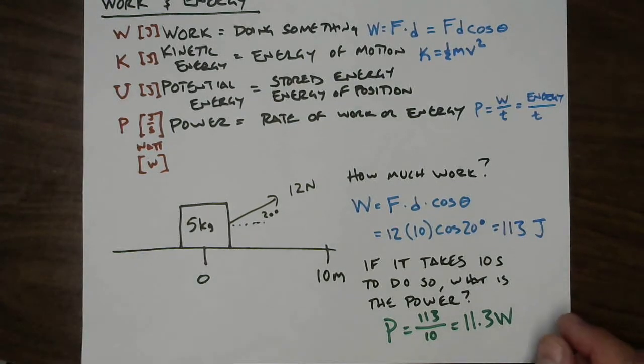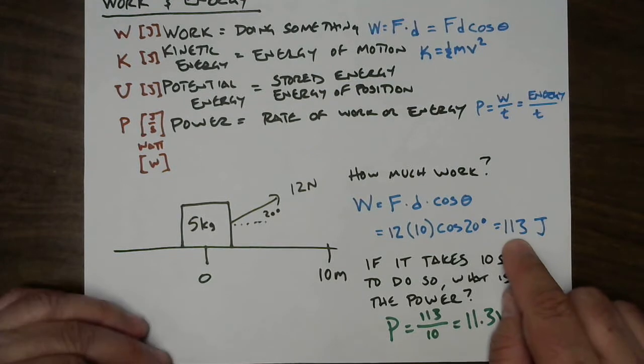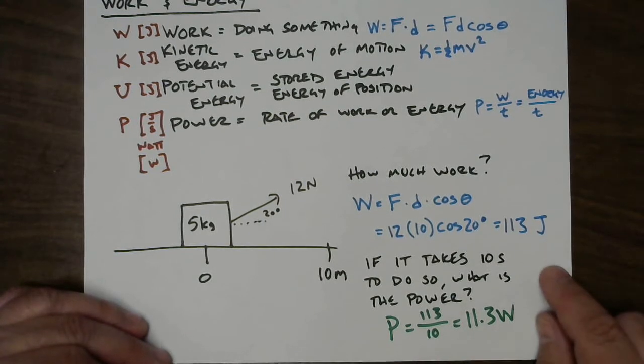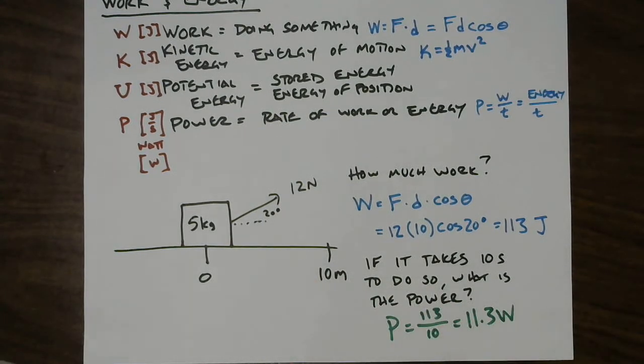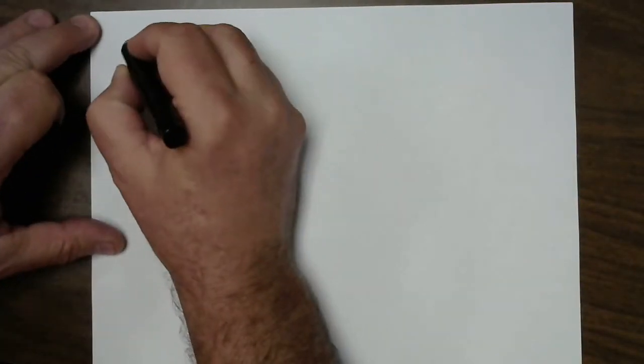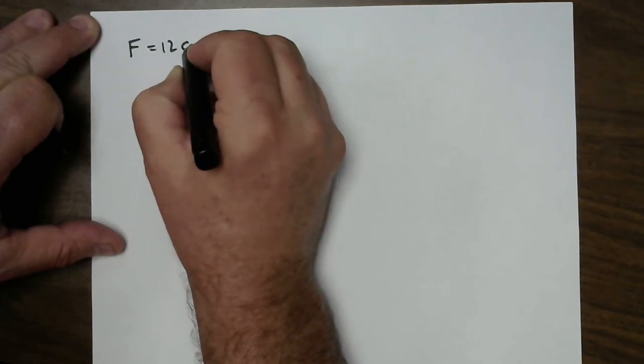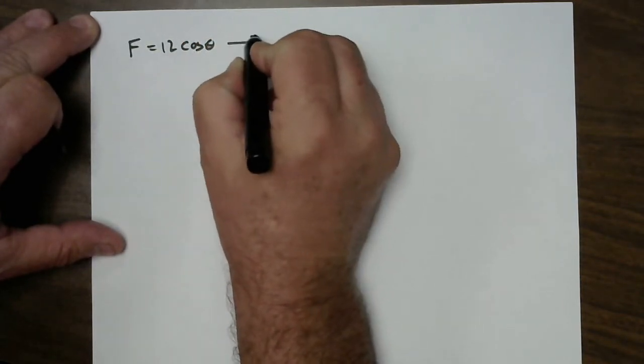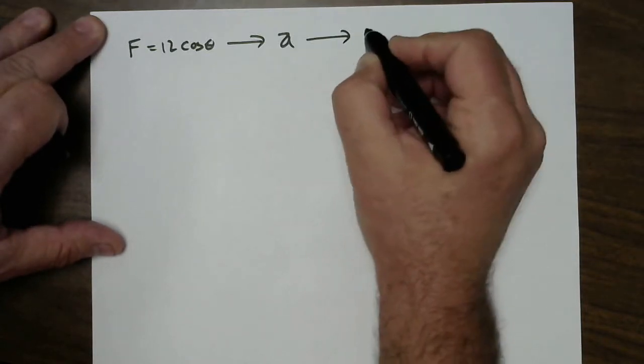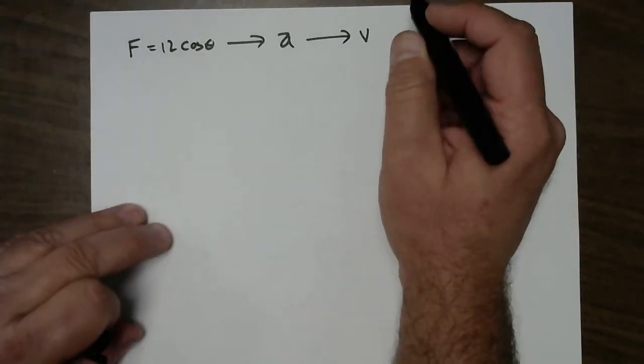So, where does this energy go? You, in pulling this thing, have lost 113 joules from your body somehow. You're more tired. Your chemical stores of energy have been used up. Where did it go? What's going on with this thing? Well, if we were to figure out what happens to this thing, we would say that we exerted a force and the force was 12 cosine theta. That force leads to an acceleration, and the acceleration plus the distance will lead to some sort of velocity. So, let's figure out that velocity.